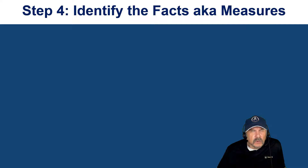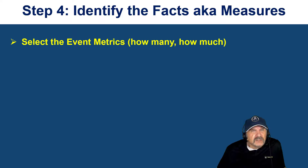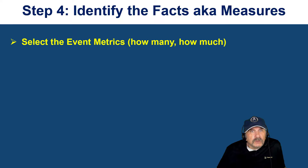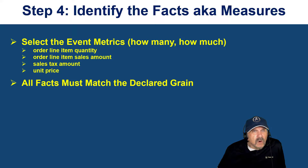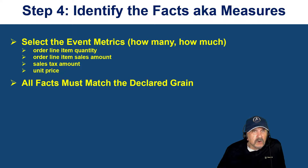Finally, step four: identify the facts, also known as measures. We're talking about metrics or measures — how much, how many. How many units were sold, how much did the person pay, how much did they pay in taxes, what was the unit price — all of these are facts. Order line item quantity, order line item sales amount, sales tax amount, and unit price are all examples of facts. All the facts must match or be at the same grain level. If your detail in your fact table is at the line item level, then the quantity should be for that line item, the sales amount should also be for that line item, and all columns should match at that level. You don't want summarized data mixed in with more detailed data — that will cause a lot of problems in your reporting.